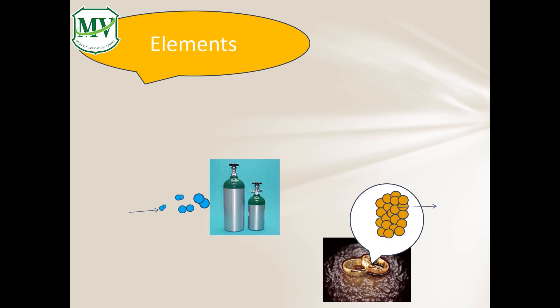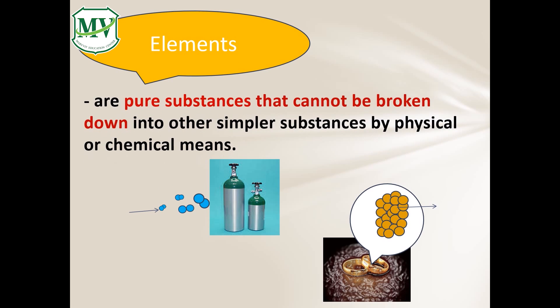Elements are pure substances that cannot be broken down into other simpler substances by physical or chemical means. The atoms of an element are similar. Example, gold. Gold is made up of gold atoms only.